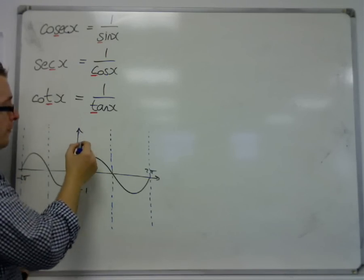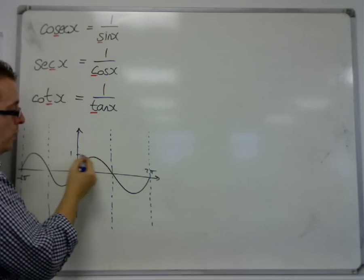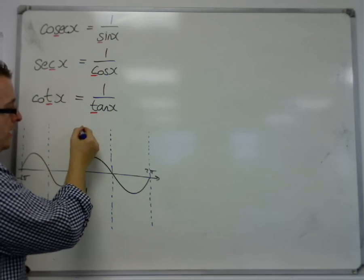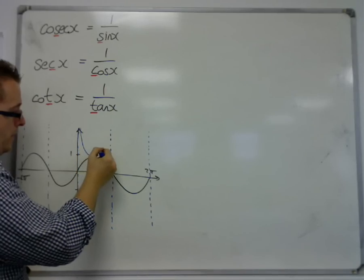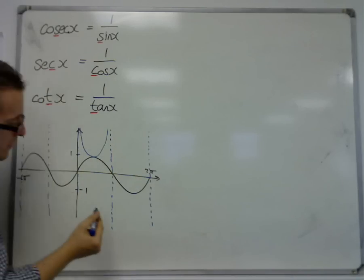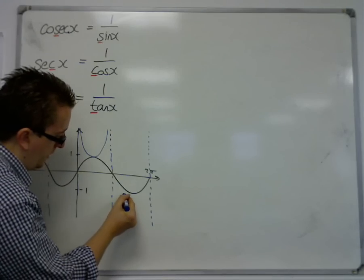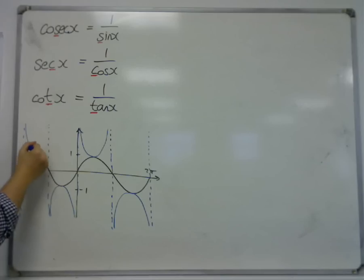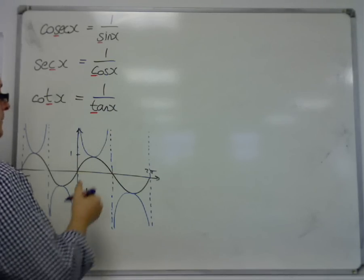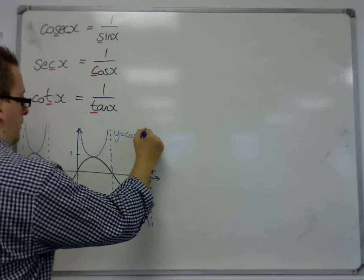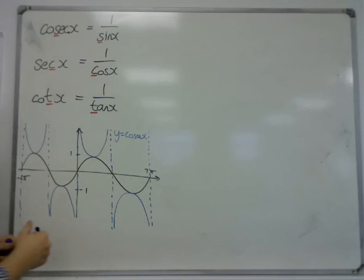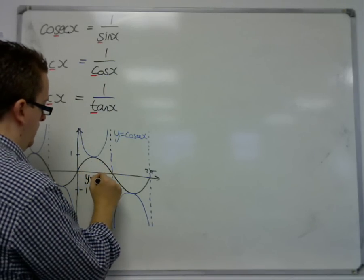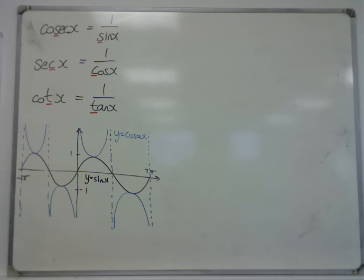1 divided by a number that is very close to 0 will be very large. So, and 1 divided by 1, because the y-value, 1 divided by 1, is 1. So it'll get very large. It'll come down, hit 1, and then go back up again. And in a similar way, the curve looks like this. And it repeats itself periodically, as sine does. So the blue curve here is cosec. And the black curve, obviously, is sine. So this is cosec.